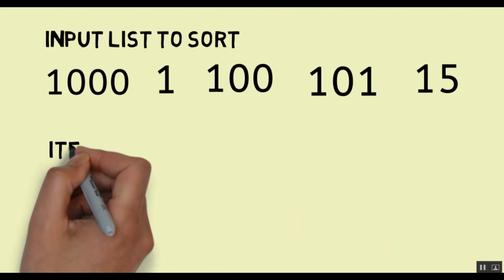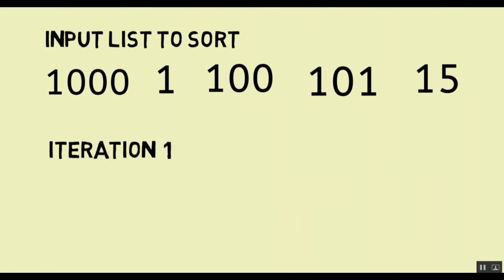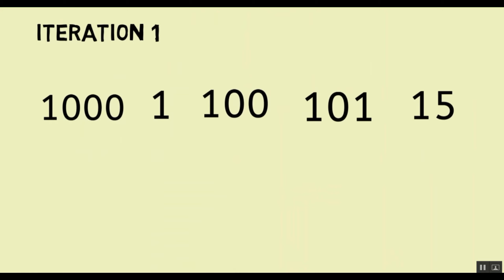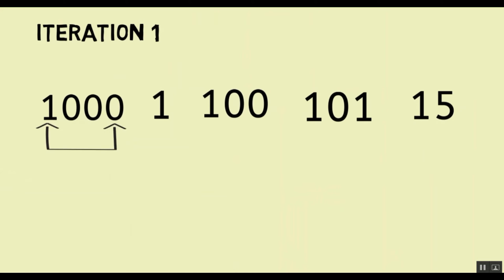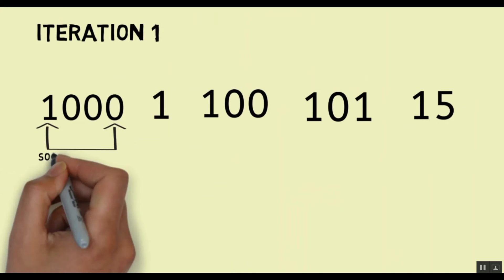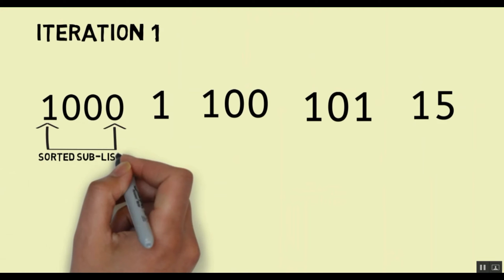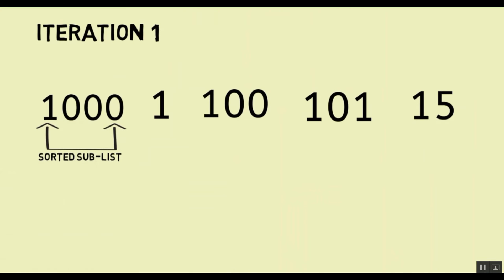Now we start with the first iteration. In the first iteration we bring down these numbers. We start with the initial list and 1000 is considered to be a sorted element or a part of a sorted sublist. The unsorted elements — that is 1, 100, 101 and 15 — we pick up the element at the front of the unsorted sublist.